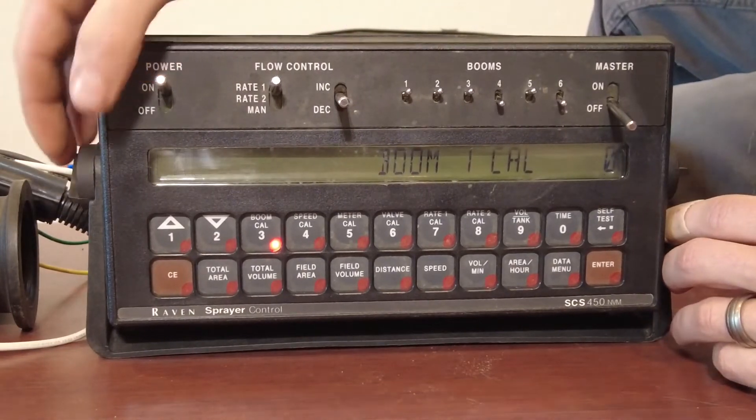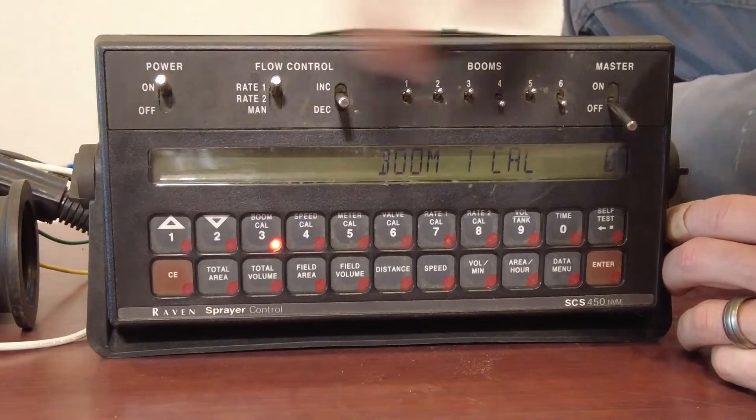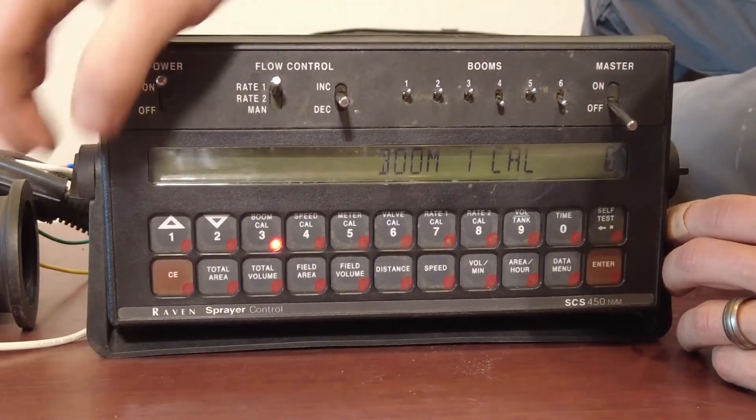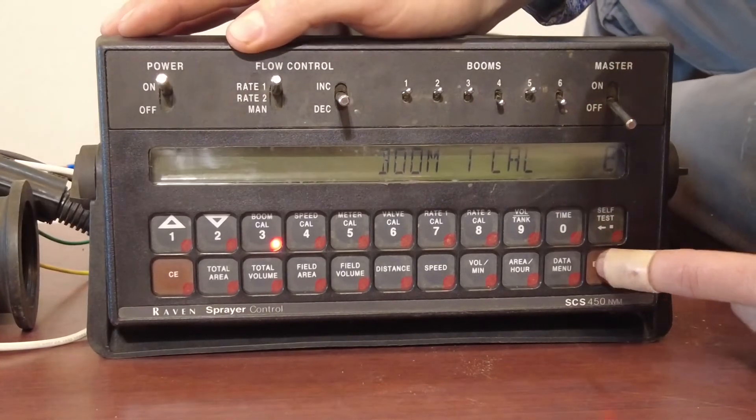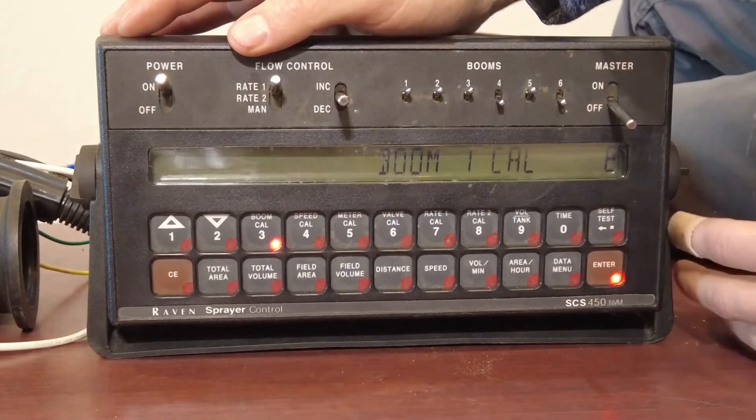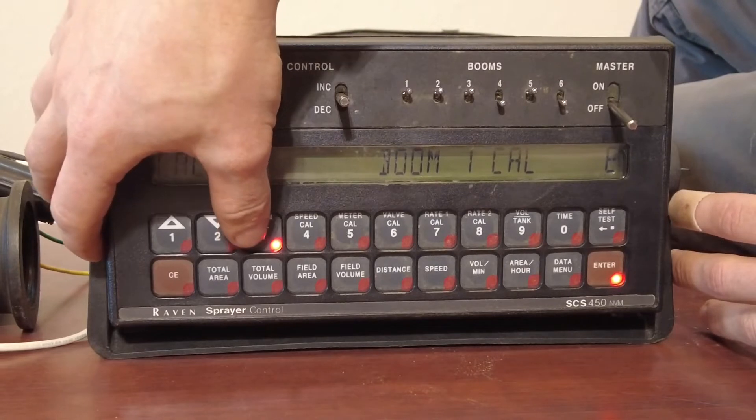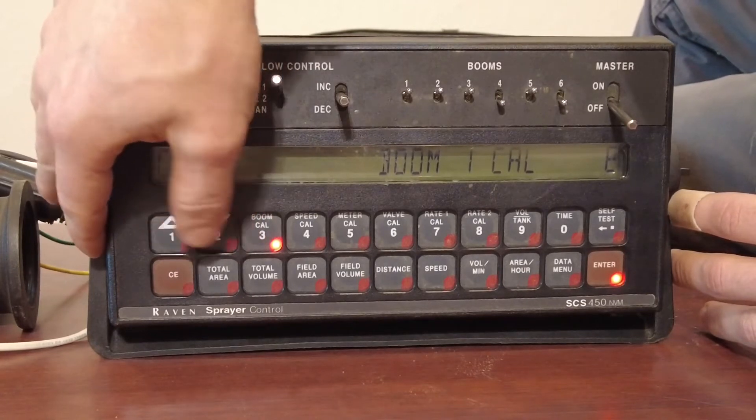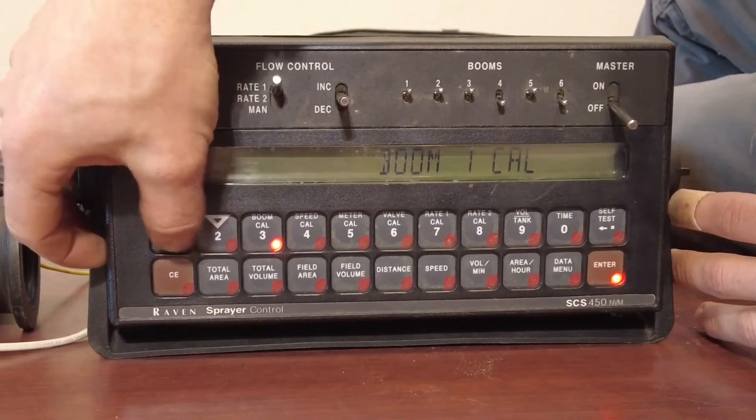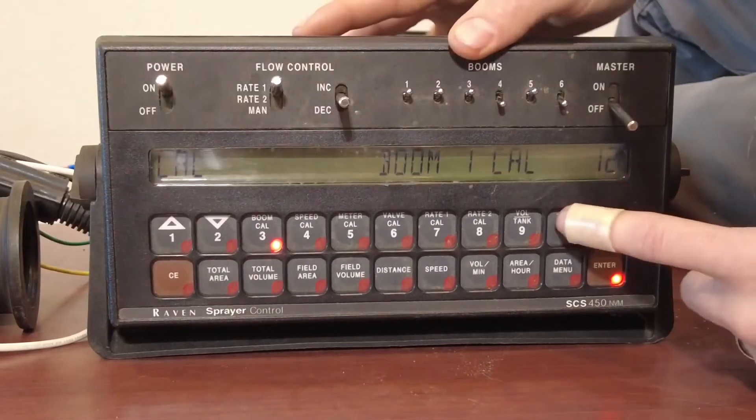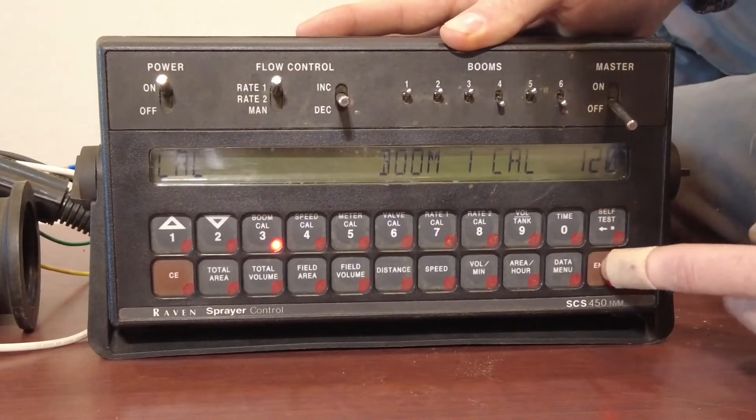And in this particular one, we have got three booms. So boom cal one. We're going to hit enter. You always have to hit enter to allow you to enter in a number. We're going to do just 120 inches. This is always in inches. So 120, enter.